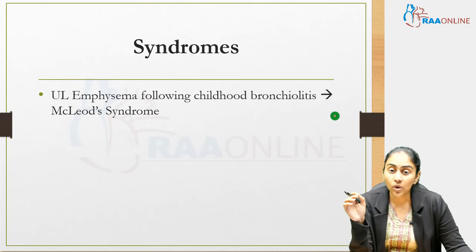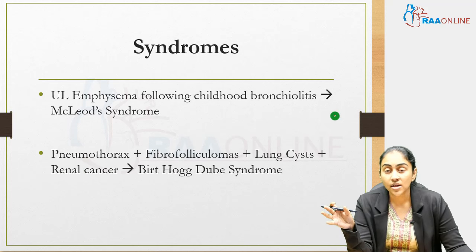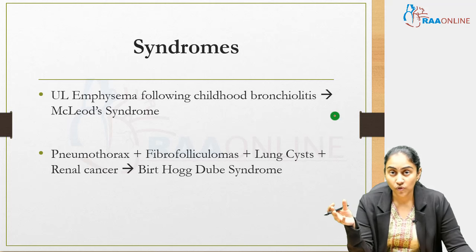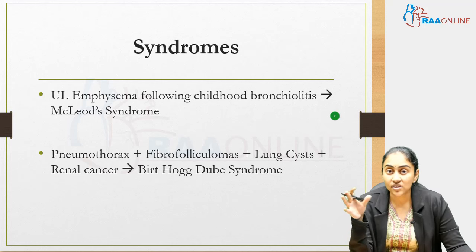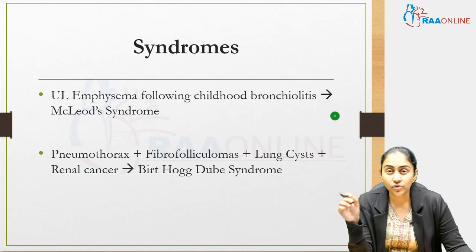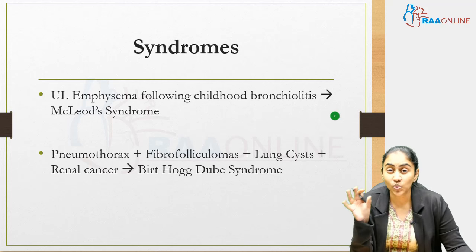Unilateral emphysema following childhood bronchiolitis is McLeod syndrome. When a case describes pneumothorax with fibrofolliculomas, lung cysts, and renal cancer, this is Birt-Hogg-Dubé syndrome. These two rare syndromes have stood out in MRCP questions.